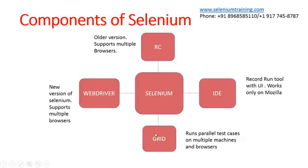Now comes the Grid. The Grid helps you run your test cases in parallel. For example, if you have 200 test cases and want to run them in parallel on three machines — one machine running tests on IE, another on Mozilla, and the next on Chrome — you use Grid. Or, suppose you want to distribute 200 test cases across four machines, with 50 test cases on each machine, to divide execution and reduce the total time. For that, again, you use the Grid.